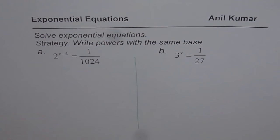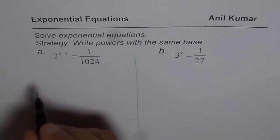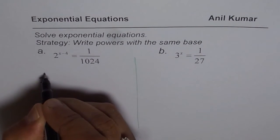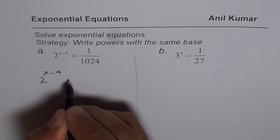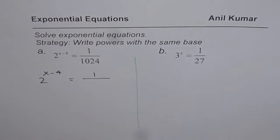The question is 2 to the power of x minus 4. Let me write this on the left side. 2 to the power of x minus 4 equals 1 over 1024.